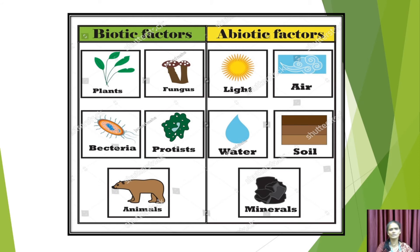Water, soil, and minerals are abiotic factors. Biotic factors refer to living things, while abiotic factors are non-living things in the surroundings. Abiotic factors are the physical and chemical factors that exist in the surroundings.